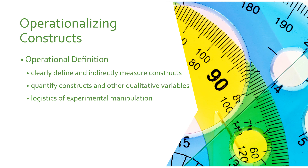An operational definition is when you operationalize a construct — clearly defining and indirectly measuring those constructs by measuring the external manifestations of underlying attitudes, perceptions, or ideas. When you operationalize a construct, you quantify it — turning it into something that can be measured with a number. You can also operationalize the logistics of an experimental manipulation. For example, to see if participants behave differently in stressful versus non-stressful environments, you might operationalize stress by having one condition where the researcher is rude and demanding, and another where the researcher is kind and calm. So you can operationalize both measured constructs and manipulations of independent variables.